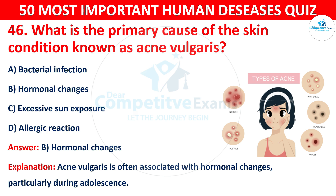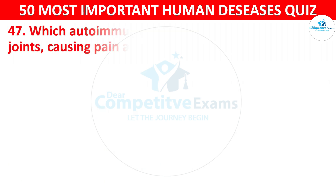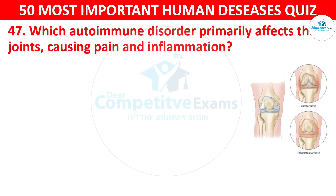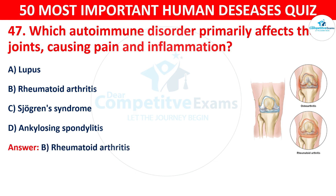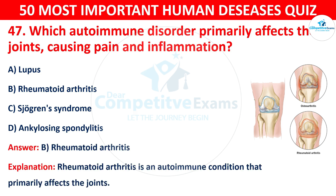Question 47: Which autoimmune disorder primarily affects the joints, causing pain and inflammation? Your options are: A) Lupus, B) Rheumatoid arthritis, C) Sjogren's syndrome, or D) Ankylosing spondylitis. The correct answer is B — rheumatoid arthritis. Rheumatoid arthritis is an autoimmune condition that primarily affects the joints.